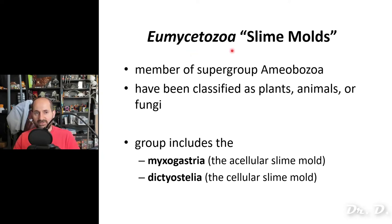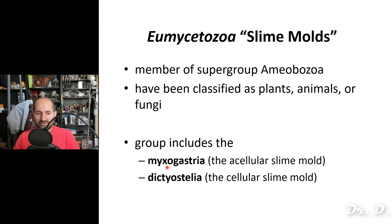Another type of amoeba you should know about are the slime molds, which are also members of supergroup Amoebozoa. They can be classified as plants, animals, or fungi. You have two types of slime molds: the Myxogastria, which are the acellular slime molds, and the Dictyostelia, which are the cellular slime molds.